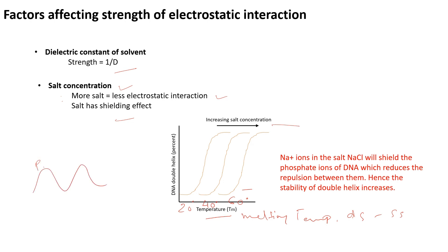In DNA, phosphate groups along both strands are negatively charged and tend to repel each other. But if we add salt — for example NaCl — the Na+ ions shield the negative phosphate charges. With the repulsion shielded, the DNA becomes more stable. When repulsion is present it is easy to break the DNA; when repulsion is removed it becomes more stable. So as we increase salt concentration, the electrostatic interaction becomes less.